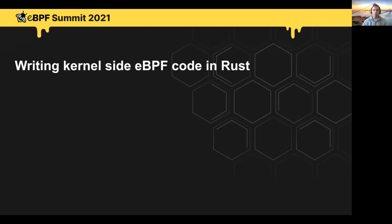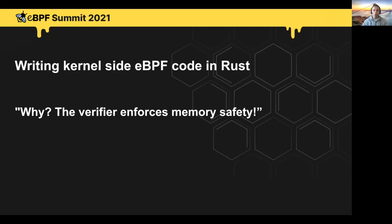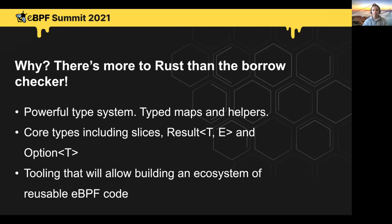What about writing the kernel side eBPF code in Rust? A lot of people ask me why bother doing that at all — if the verifier already enforces memory safety, what is the advantage of using Rust over C? The answer is that there's a lot more to Rust than the borrow checker. Rust comes with a very powerful type system. In AYA, we're able to provide a strongly typed API for maps, helpers, programs — pretty much everything. Whereas working with maps in C, you end up working with a lot of void pointers. Rust also comes with very useful types including byte slices and the result and option types, which are especially handy for error handling. And if you've written eBPF code, you know you end up implementing a lot of very strict error handling in order to pass the verifier checks.